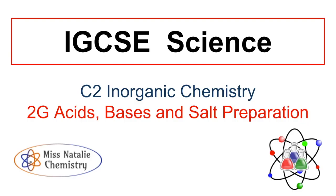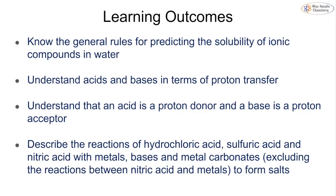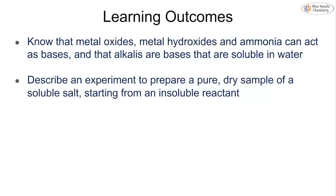This video is going to be looking at topic 2g: acids, bases and salt preparation, as part of the double content for IGCSE chemistry. We're going to be looking at a number of different learning outcomes, including the general rules for predicting solubility, how we explain acids and bases in terms of proton transfer, and also the reactions of hydrochloric, sulfuric and nitric acid with metals, bases and metal carbonates in order to make salts, as well as knowing the difference between bases and salts and being able to describe an experiment to prepare a pure dry sample of salt.